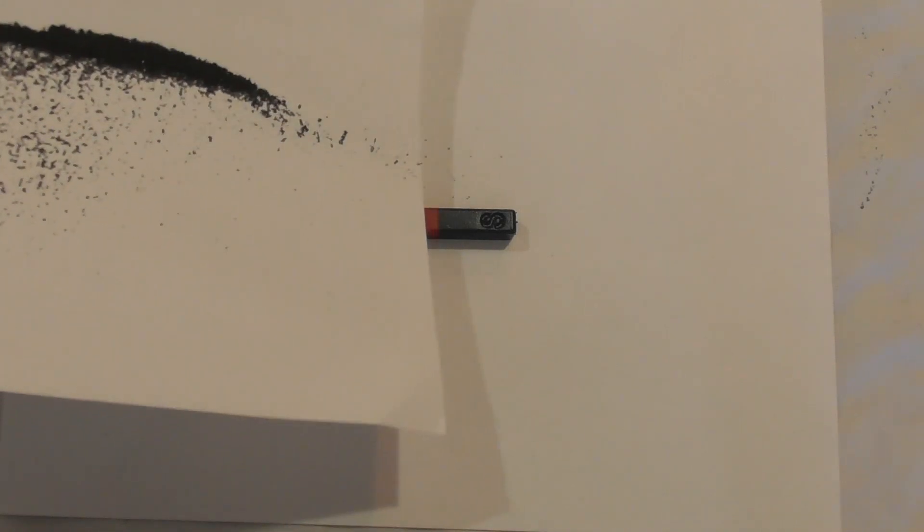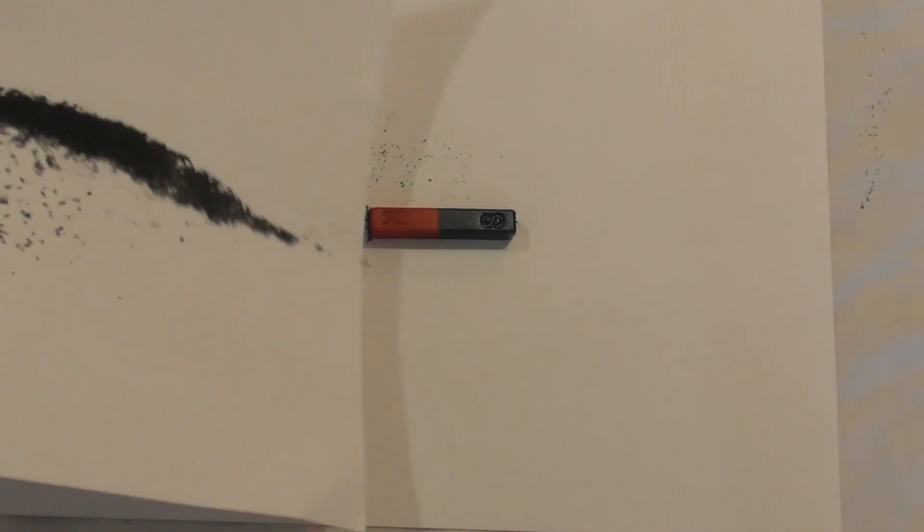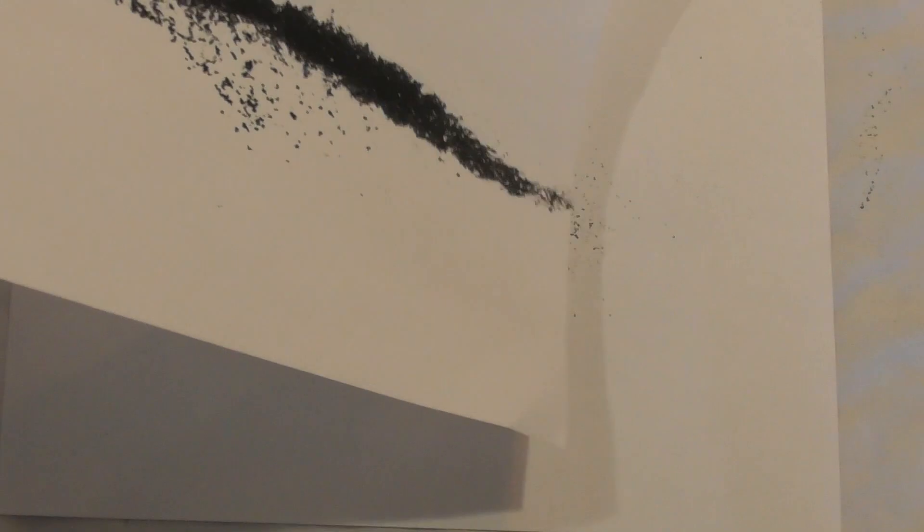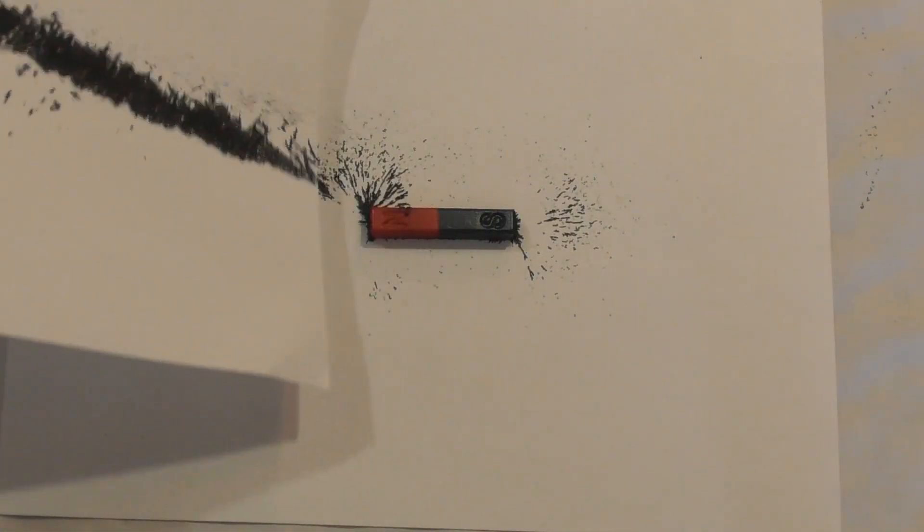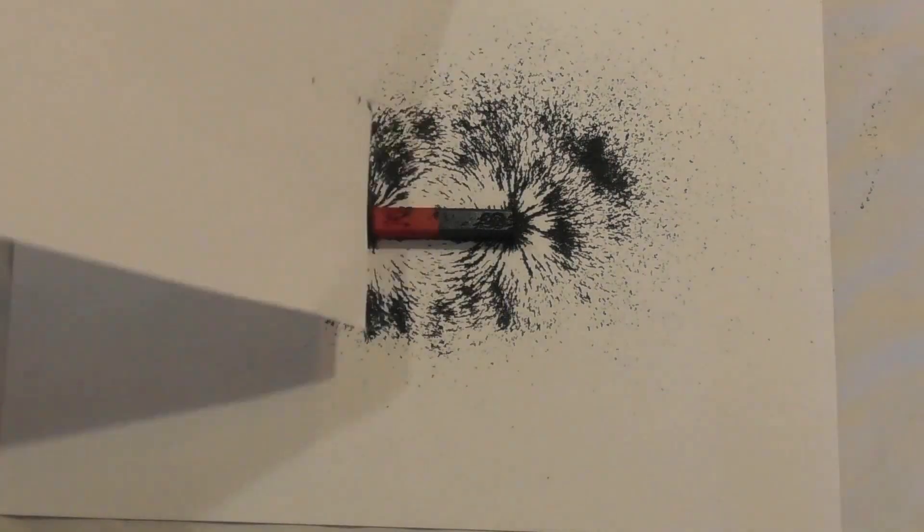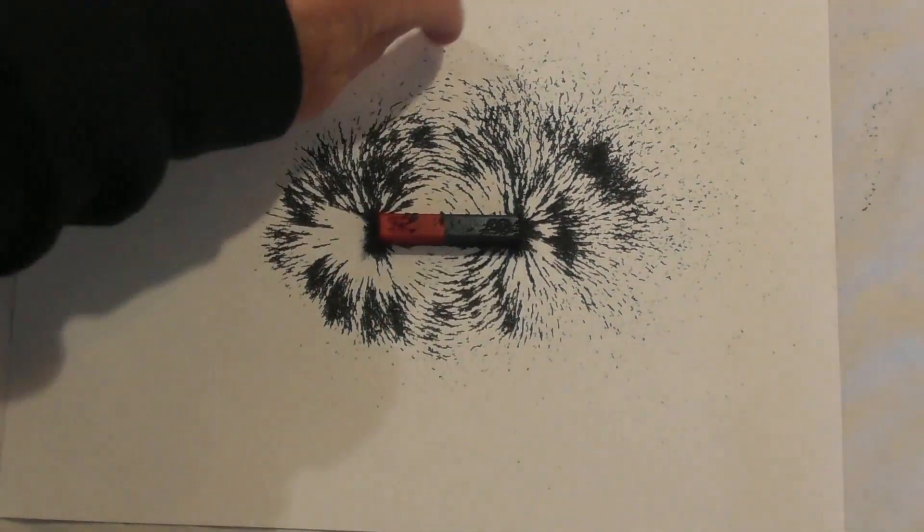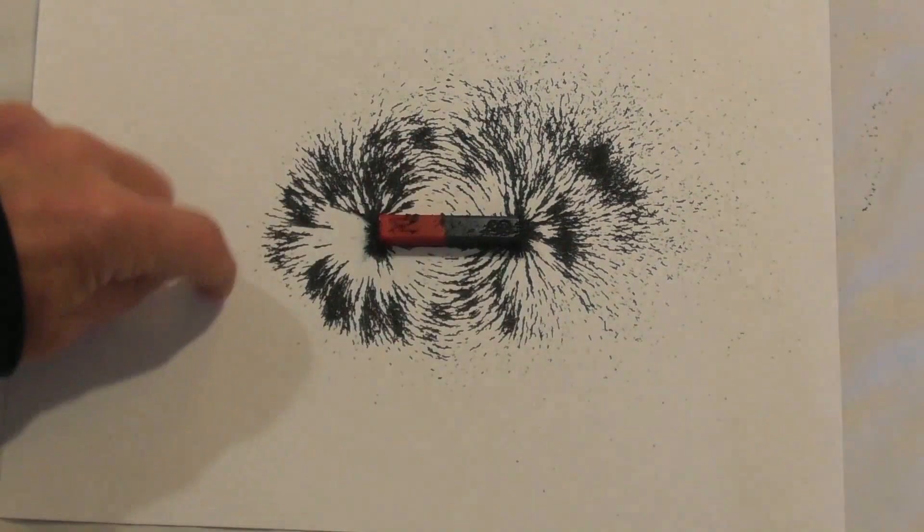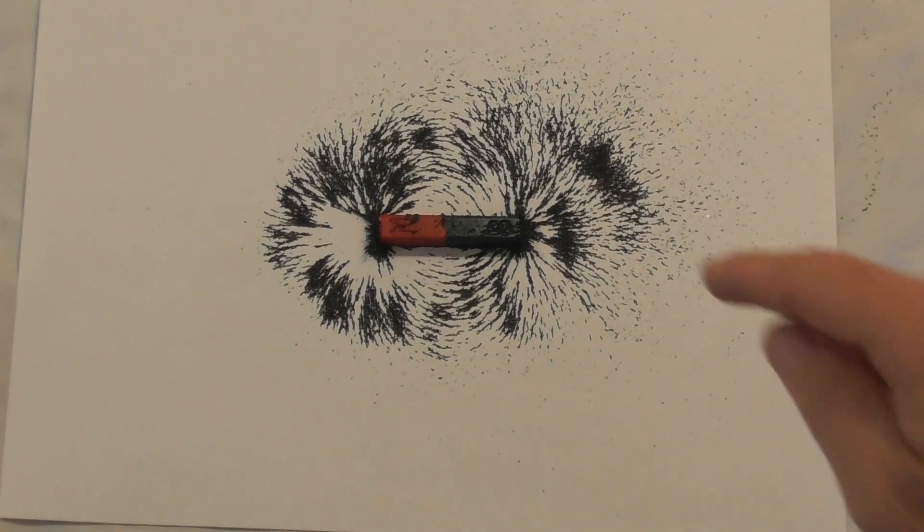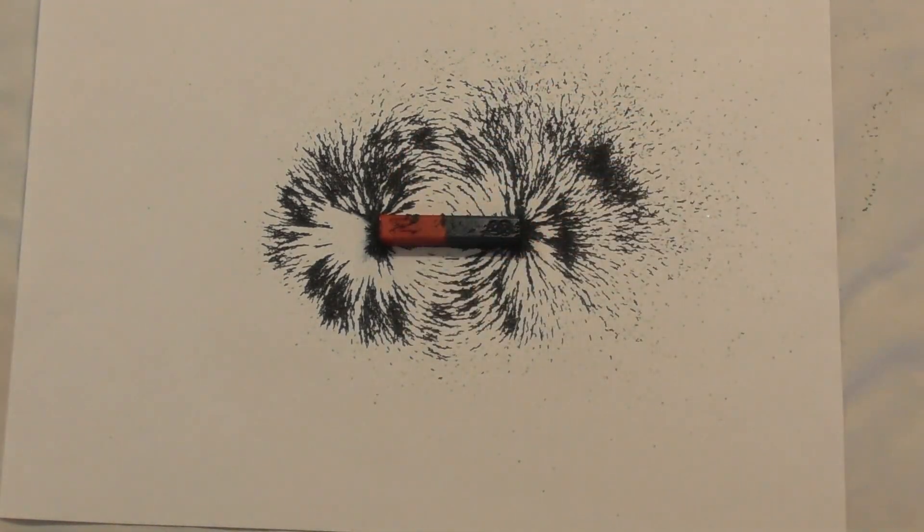One way to see magnetic field lines is to take a magnet, use metal shavings, and sprinkle them on here. So I'll go ahead and do this, and hopefully we'll be able to see these field lines. Okay, so you can see the magnetic field lines.